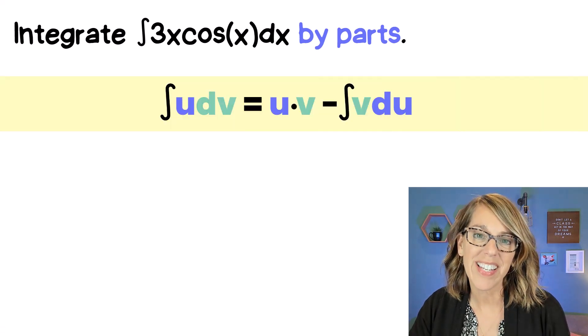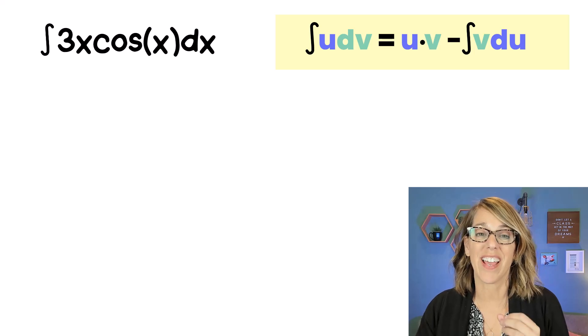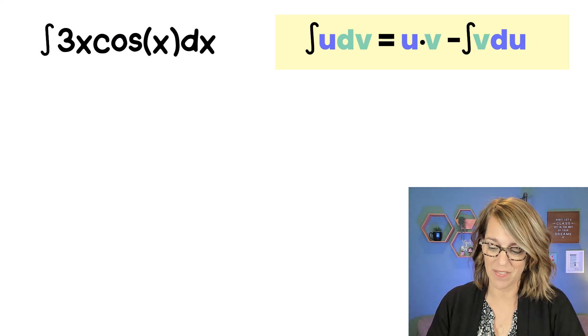As we integrate this by parts, we're going to need this formula, which means that the very first thing we need to do is to decide what's going to be u and what's going to be our dv.